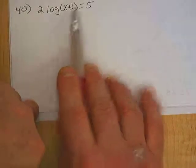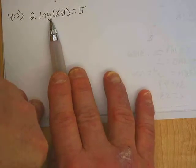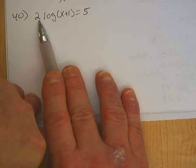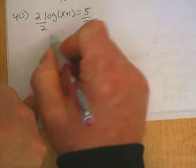Okay, to solve this problem, before we can unlock the logarithm, we need to get rid of this 2 first. And 2 is multiplying the log, so I'm going to divide each side by 2.